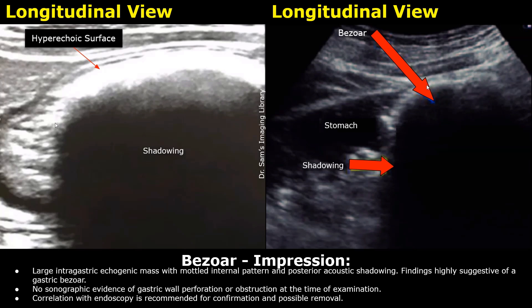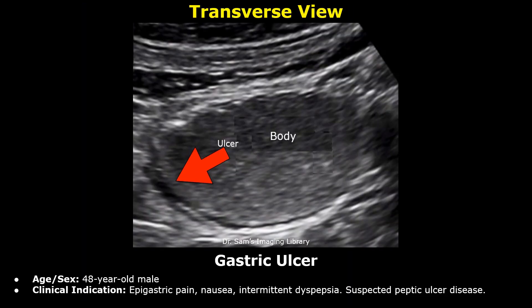This report is of a gastric ulcer. The patient is a 48-year-old male. Clinical indication: epigastric pain, nausea, intermittent dyspepsia, and suspected peptic ulcer disease.